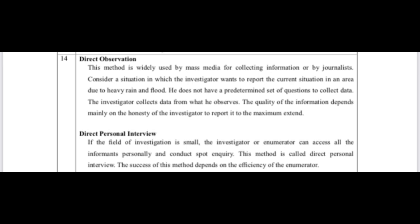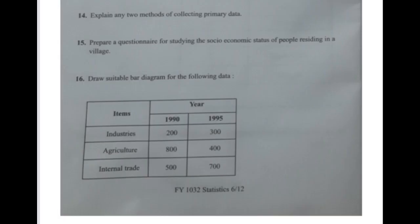If the field of investigation is small, the investigator or enumerator can access all informants personally and conduct a spot enquiry. This method is called the direct personal interview, and the success of this method depends on the efficiency of the enumerator.